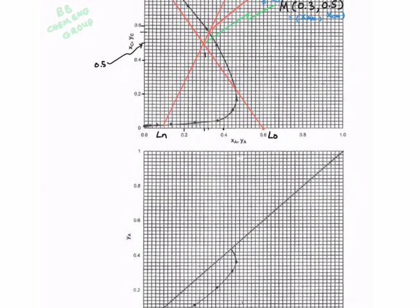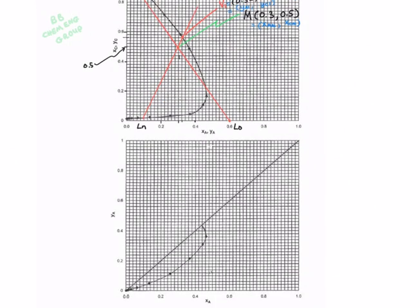Once we have recognized the coordinates for V1, now we can draw and find the coordinates for L1. Draw a vertical line downward, then a horizontal line, then vertical line upward until it reaches the equilibrium curve to get L1. So this is your L1 which lies on the raffinate layer.